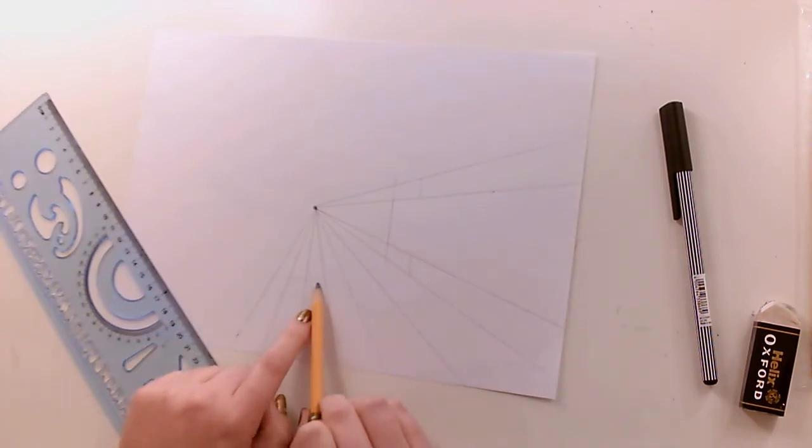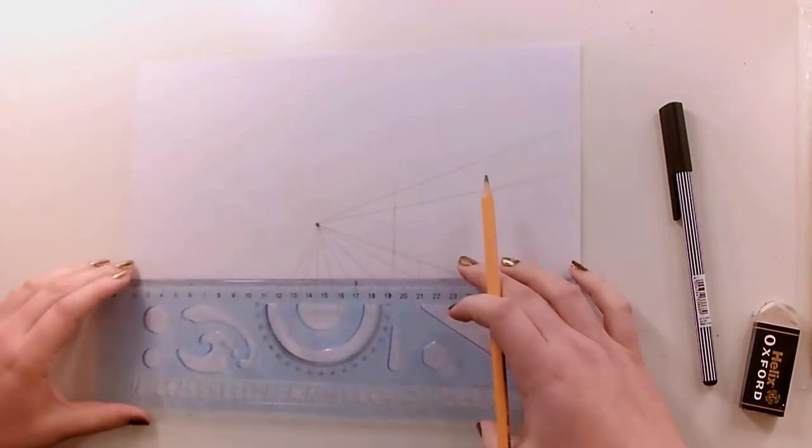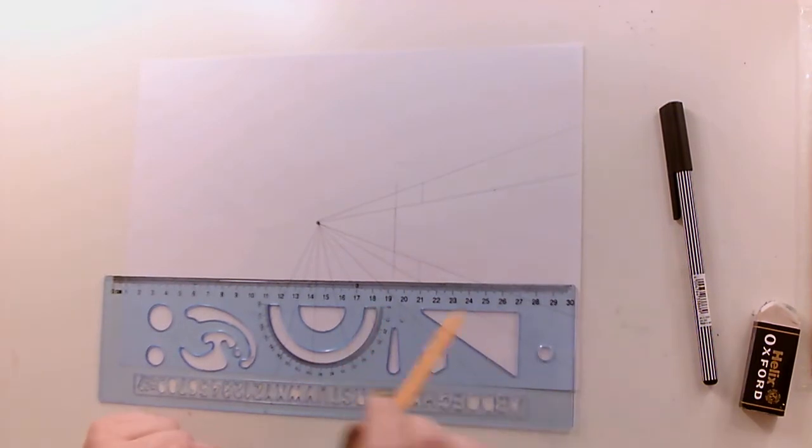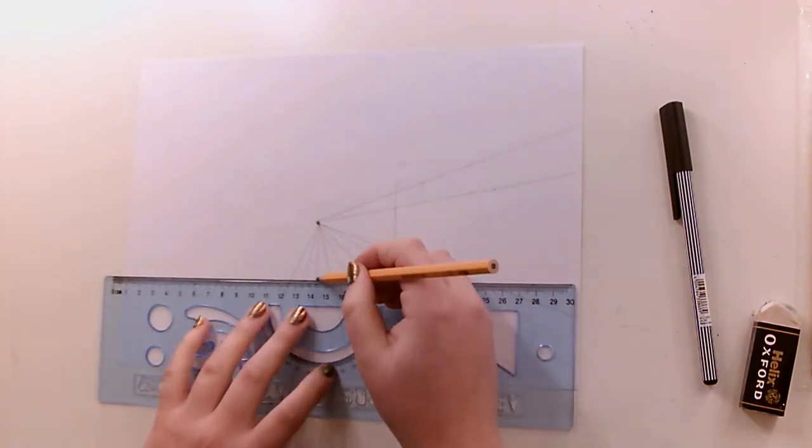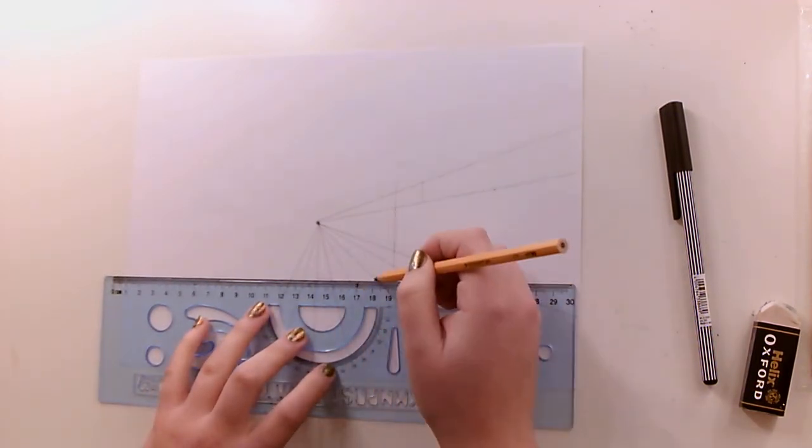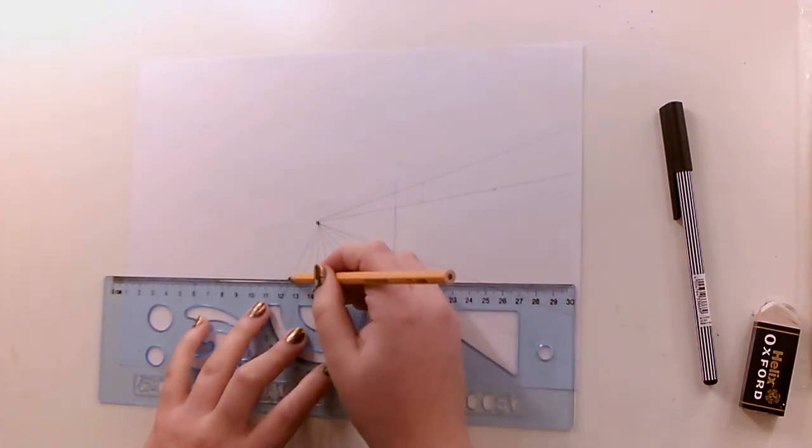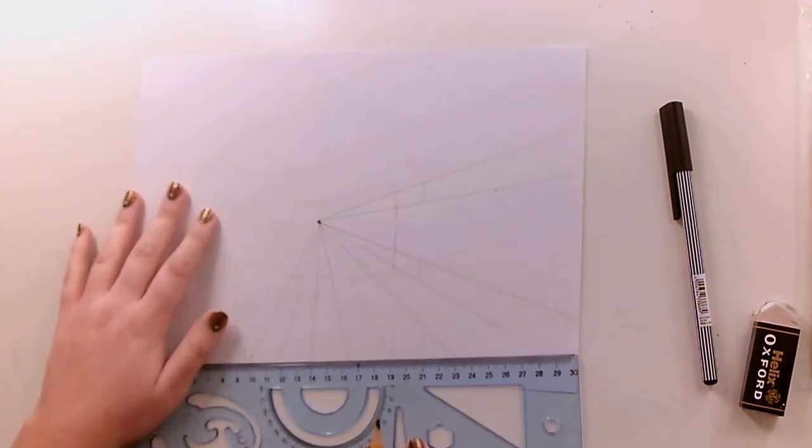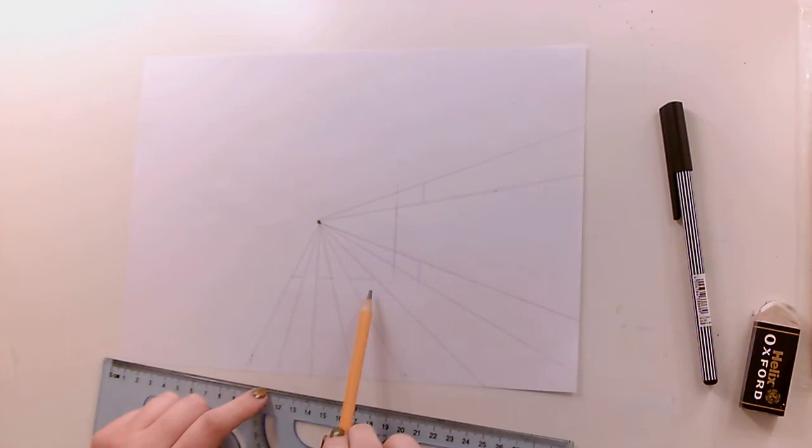Okay. So say for example this is my middle one here. I'm going to draw my straight line along. This time it's actually going up and down the paper. Straight line across. Straight line across. Straight line across. So there I've created three buildings again, haven't I?